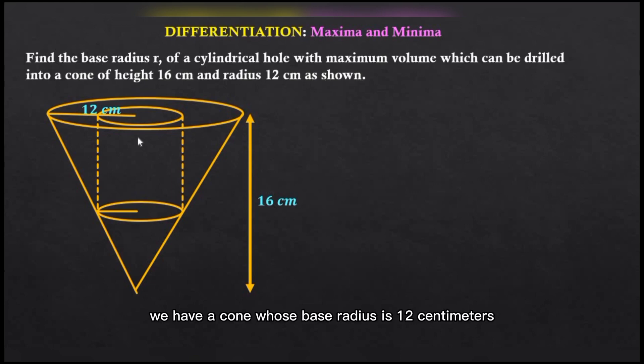So we have a cone whose base radius is 12 centimeters and height 16 centimeters, and then a cylindrical hole is to be drilled into the cone.